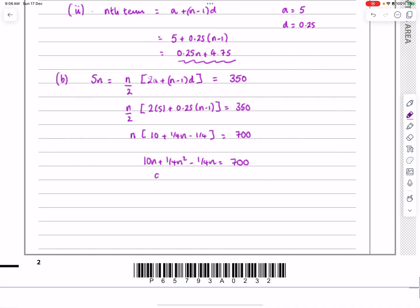Multiply this all out and tidy it up. So that's going to be 10n plus 1/4 n² minus 1/4 n is equal to 700. Or in other words, 9.75n plus 1/4 n² is equal to 700. And that was just a question of multiplying this all out and tidying it up.